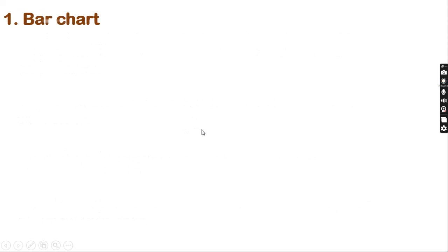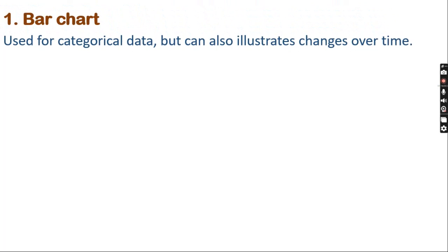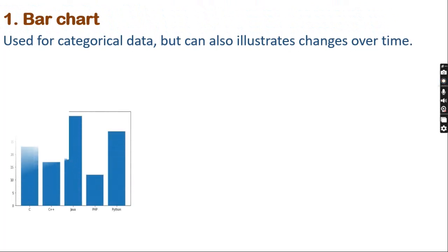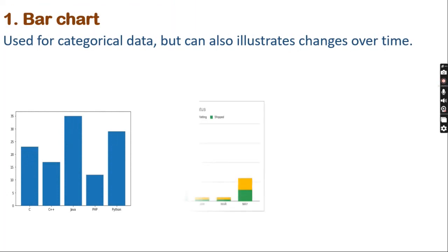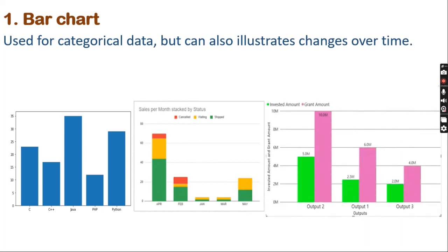Number 1: Bar chart. Bar chart can be used to visualize categorical data and also to illustrate changes over time. There can be three different types of bar chart, such as the simple bar chart, stacked bar chart, or the clustered bar chart. If you want to represent a group of different data together, we can either use a stacked bar chart or the clustered bar chart.